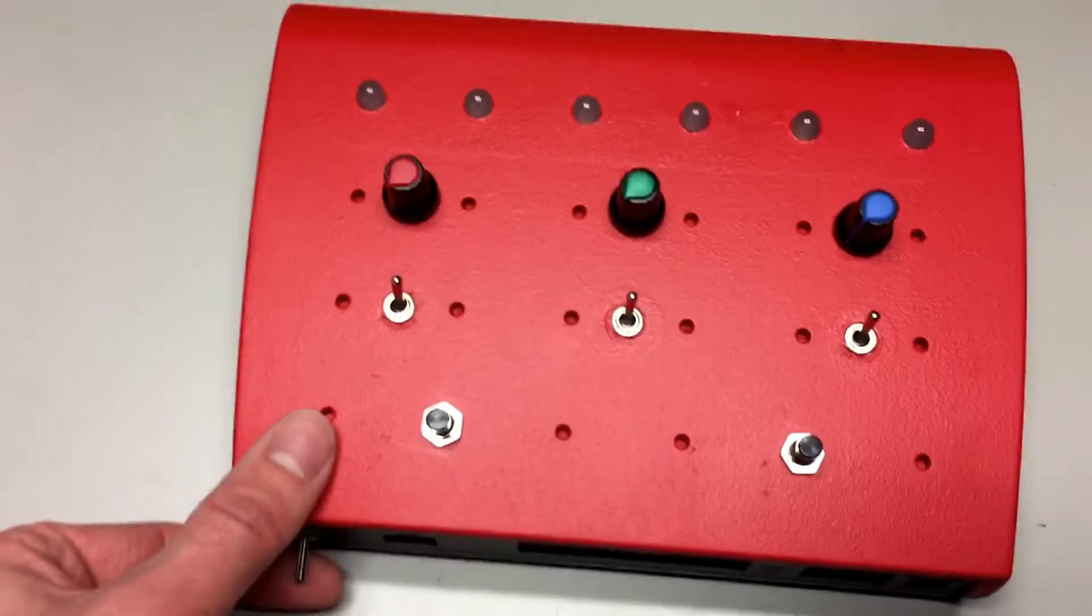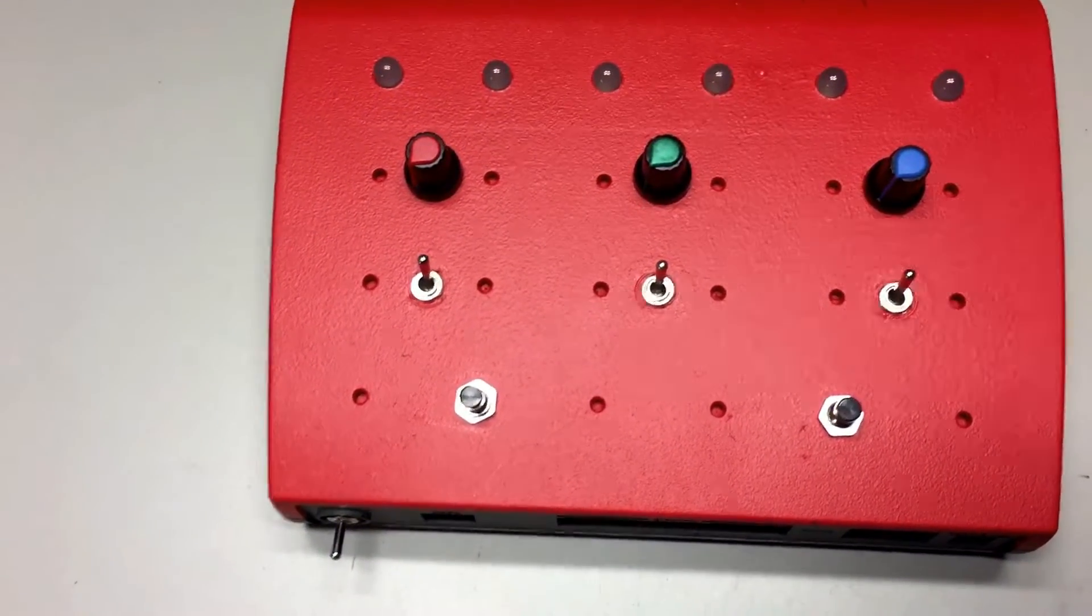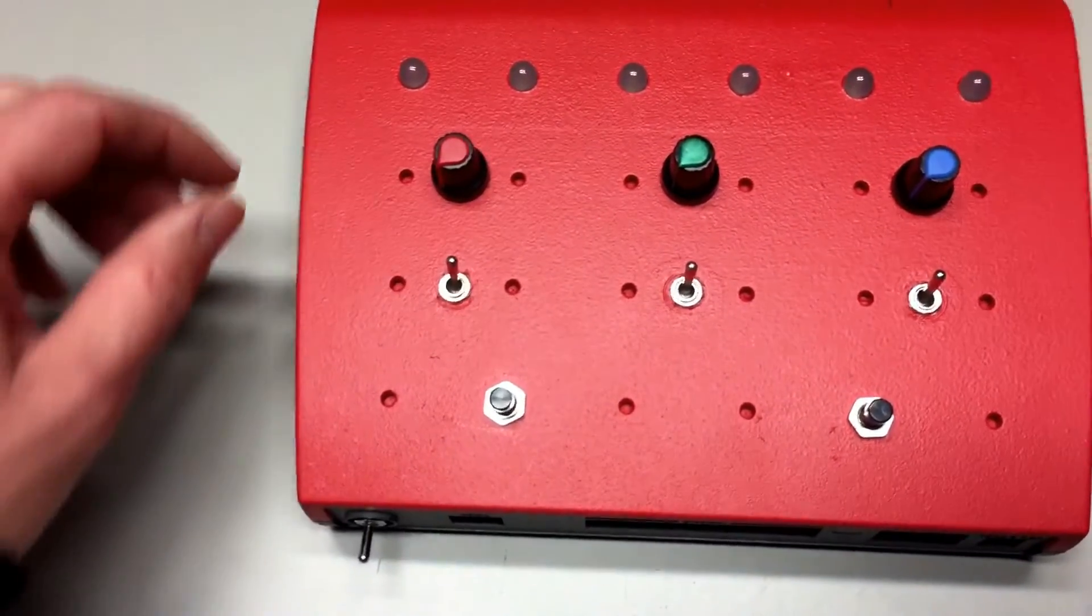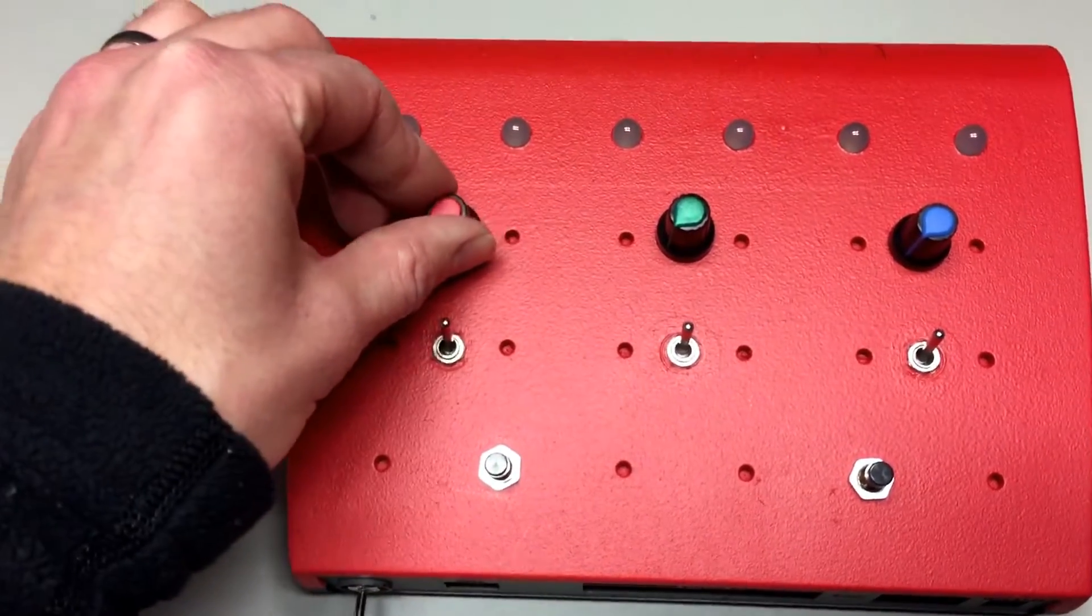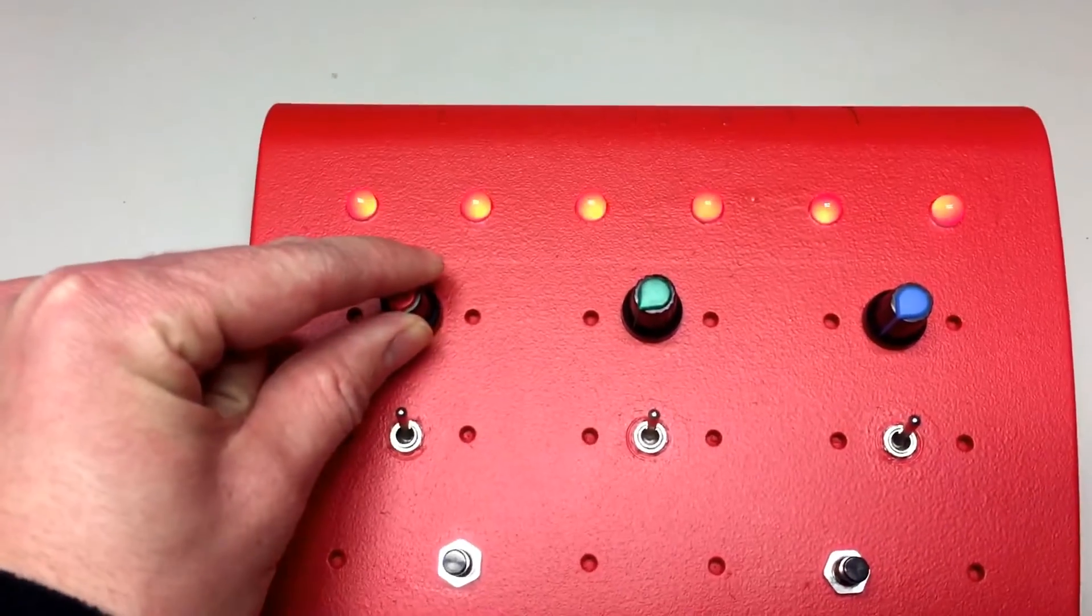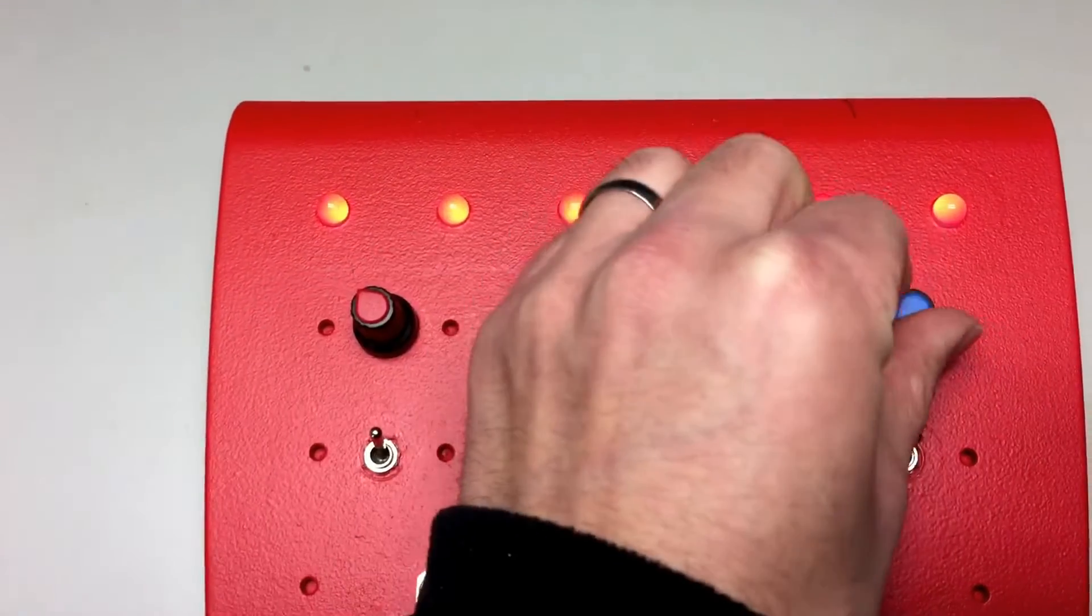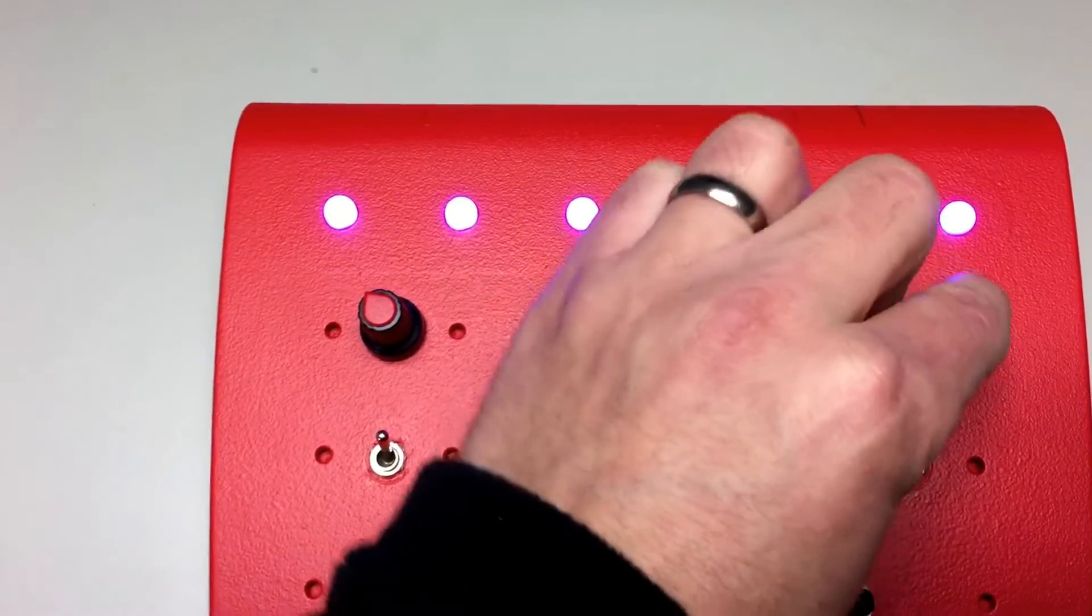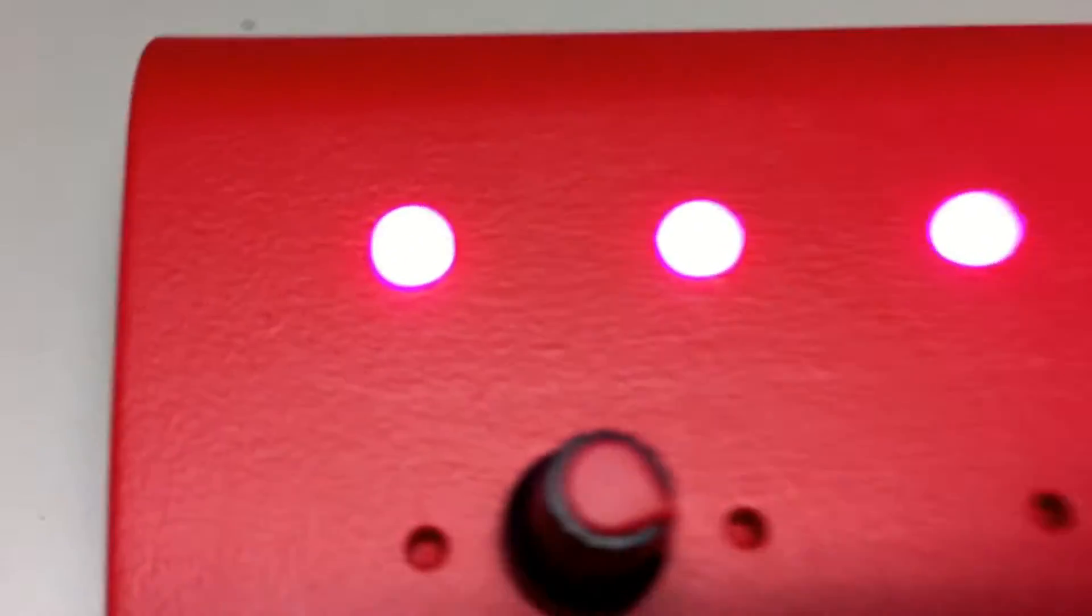So let's power it on. The first mode is a color blending option. You can control the amount of each R, G, and B by twisting these knobs, so you can learn to color mix.